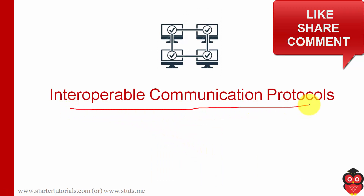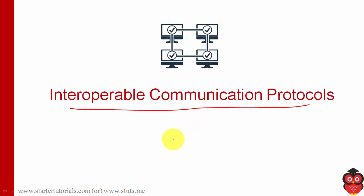The next characteristic is interoperable communication protocols. In IoT, there are lots of protocols being used like ZigBee, 6LoWPAN, Z-Wave, Weightless, and many others. Some of those protocols are proprietary protocols, meaning only the organization which developed them will use them. Such protocols should be able to communicate with each other — data represented in one protocol should be converted into data represented by another protocol. That is the essence of interoperable communication protocols.